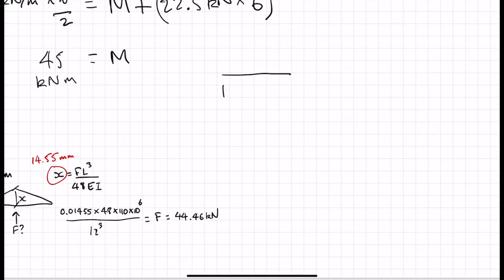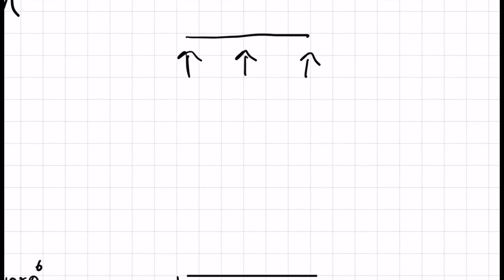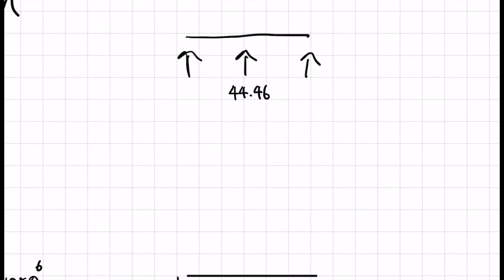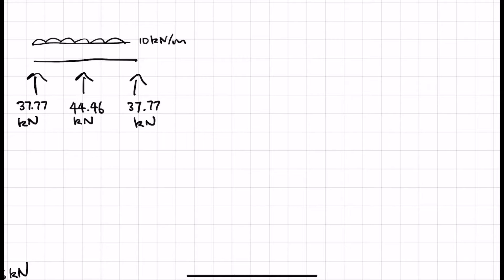Right, good. So our new situation will look like this. 44.46 kilonewtons in reaction. We did have 120 kilonewtons coming down because that was 10 kilonewtons per meter times 12 meters total length. So 120 minus 44.46, 75.54, divide that by 2. So each of the outer reactions is 37.77 kilonewtons.